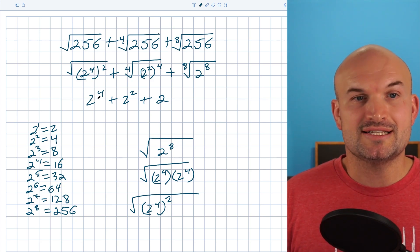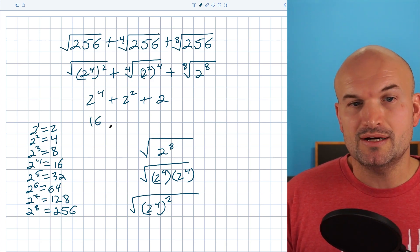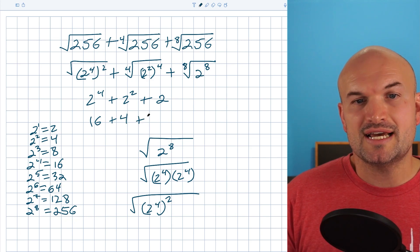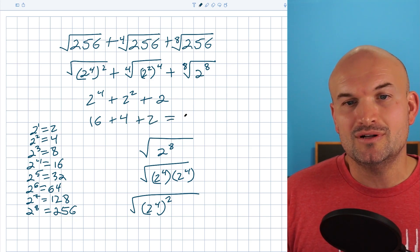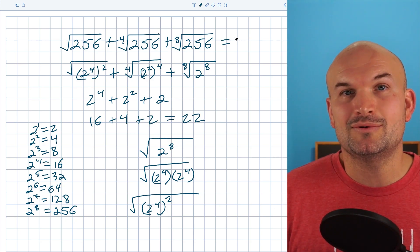Now what we have here is a two to the fourth, which we recognize to be a 16, a two squared, which we recognize to be a four, and then plus a two, which means this is all going to be equal to 22. So our original example is equal to 22.